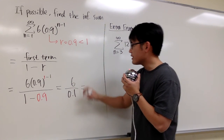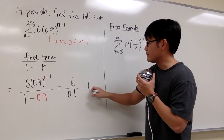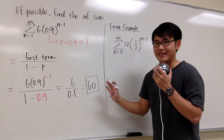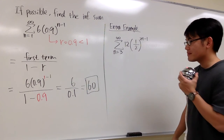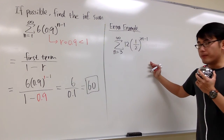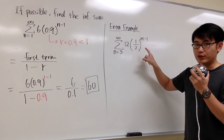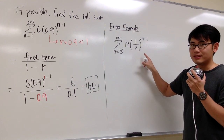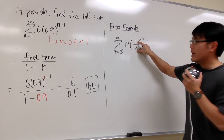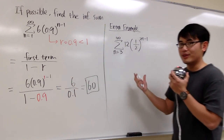6 divided by 0.1 gives us 60, and that is the answer for this first series. Now let me give you another example to illustrate the idea of when we may have to adjust the exponents to get the correct common ratio and the correct first term, especially when n does not start at 1 or 0.